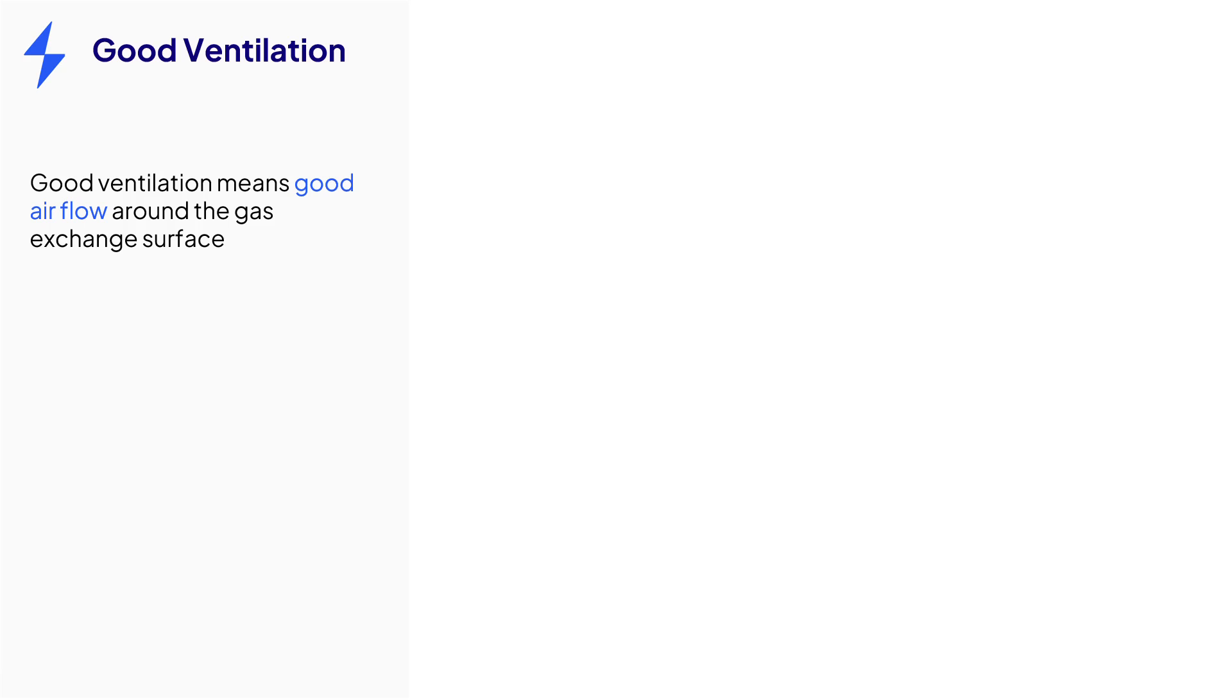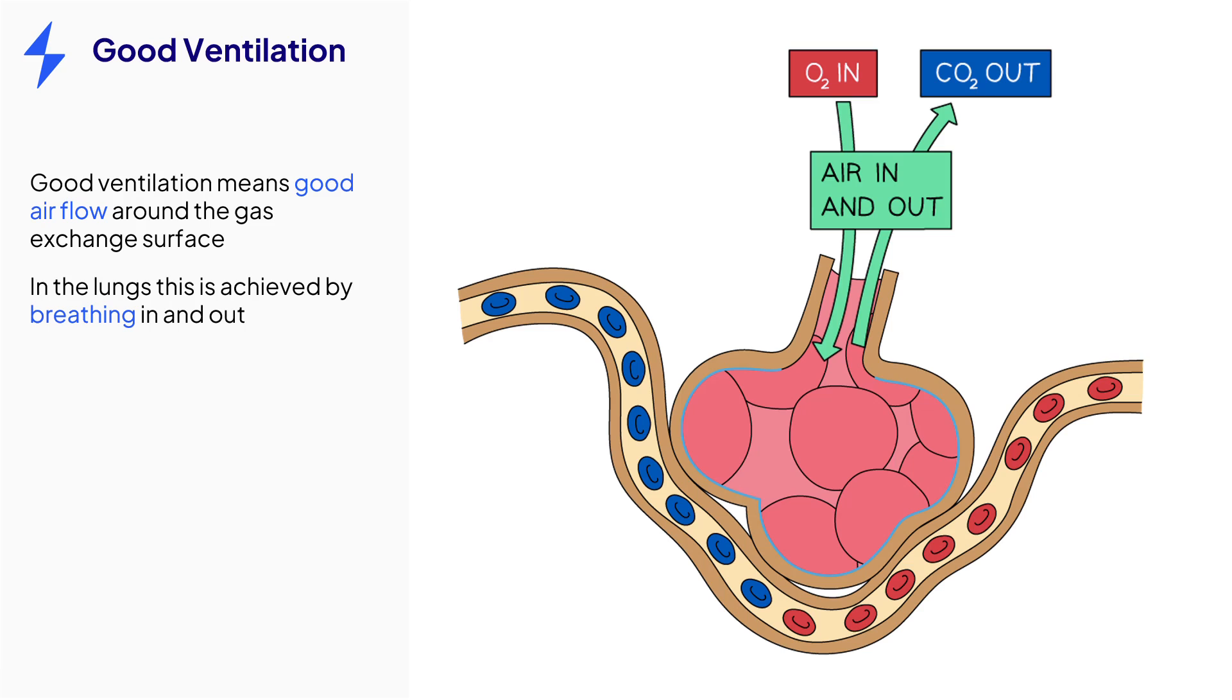Good ventilation means that there's plenty of airflow around the gas exchange surface. In the lungs, we constantly breathe in and out, meaning that we replenish the air inside each alveolus. This means that there is always a high concentration of oxygen inside the alveoli, ready to be diffused into the blood where it is at low concentration.